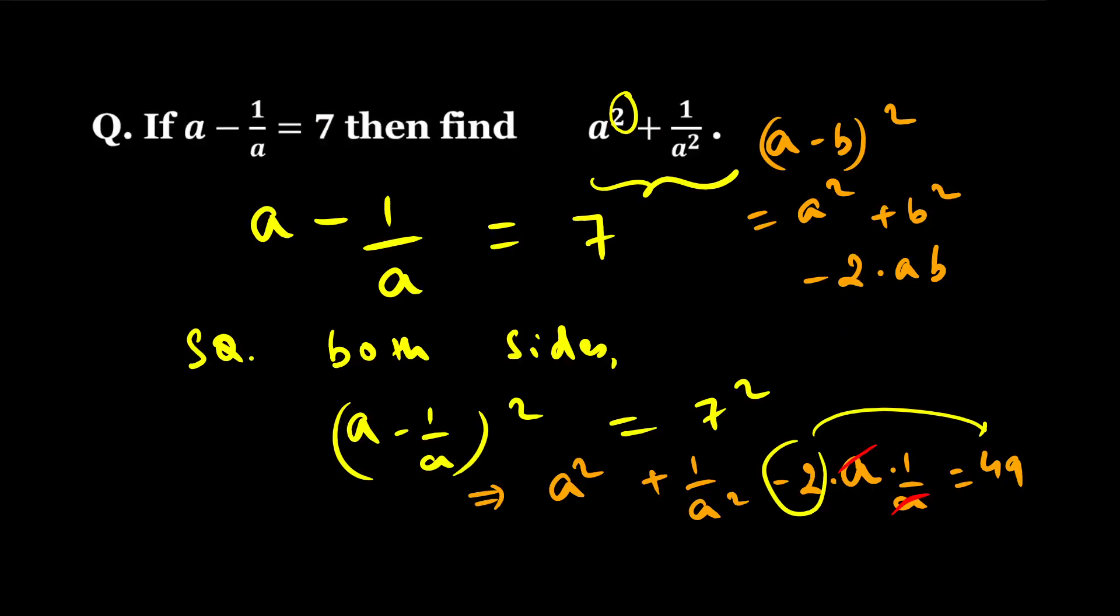Once you square both sides and you apply this formula a minus b whole square, which is a squared plus b squared minus 2ab, then you can easily find your solution. So let's meet in some other videos, we will discuss more such questions. See you guys, thank you.